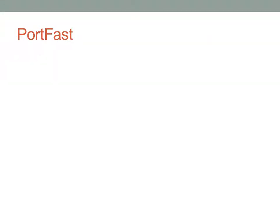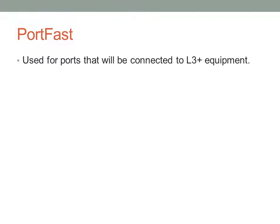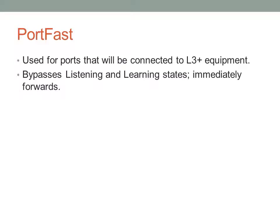The first feature we're going to discuss is PortFast. It's a very popular feature because it basically removes a port from SpanningTree. It's used for ports connected to Layer 3 or higher equipment — routers, end-user PCs, servers, or possibly a wireless access point. The idea is that listening and learning states are bypassed, and ports configured with PortFast are automatically brought up as soon as the port is physically up. If we know a port won't be connected to a switch, it shouldn't have to participate in SpanningTree.